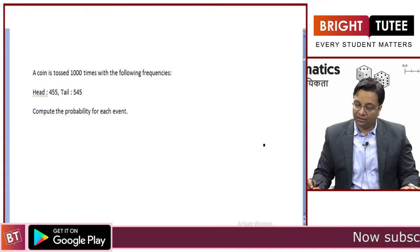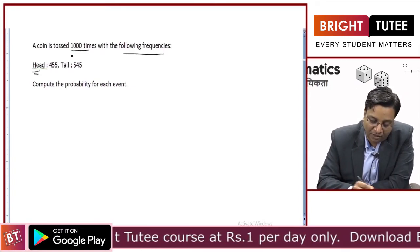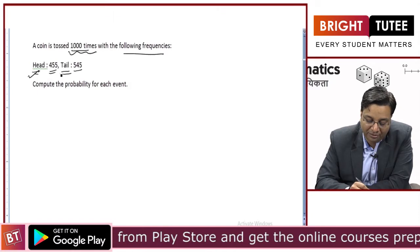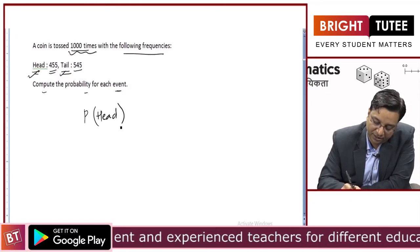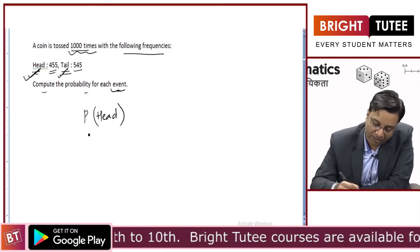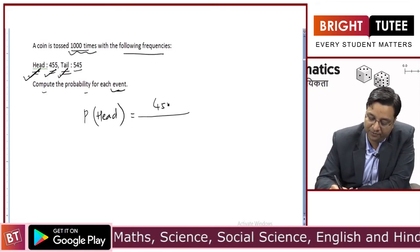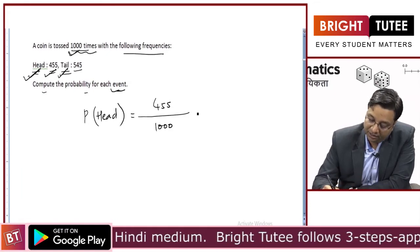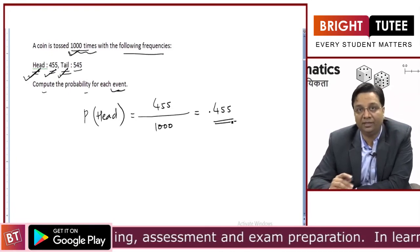Now let us see some examples. A coin is tossed 1000 times: out of these 1000 times, head came on top 455 times and tail came on top 545 times. Calculate the probability of each event. Probability of head coming on top equals number of times the event occurred — 455 — divided by number of times the experiment was performed — 1000 — which equals 0.455.